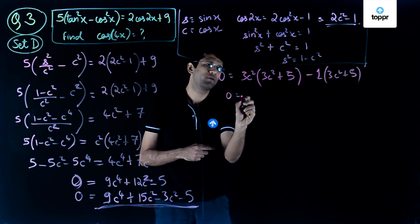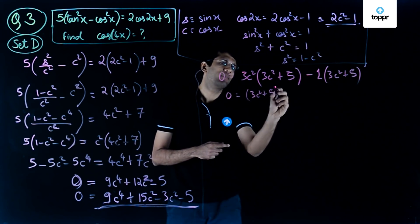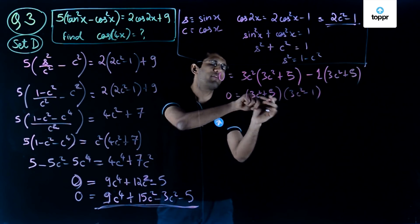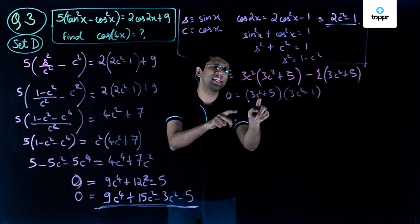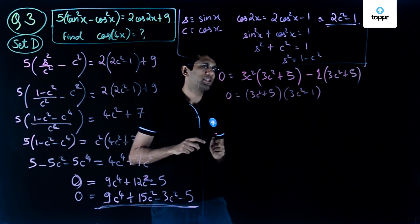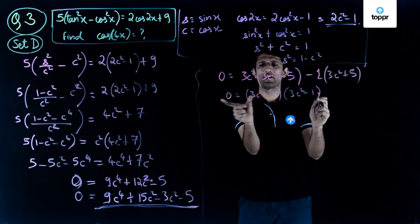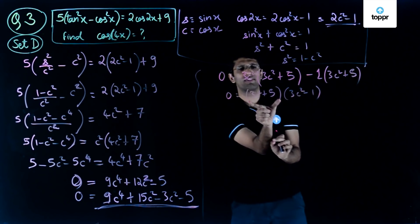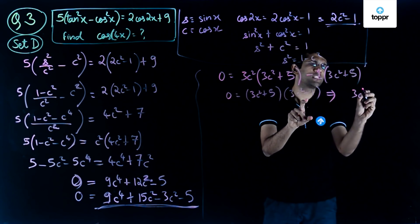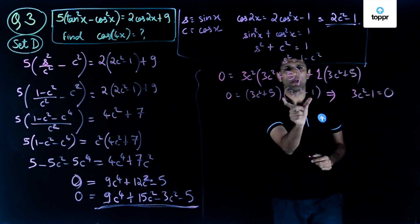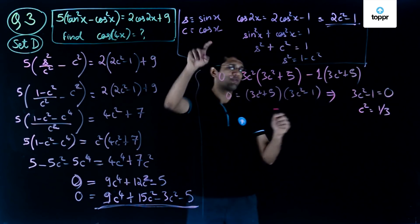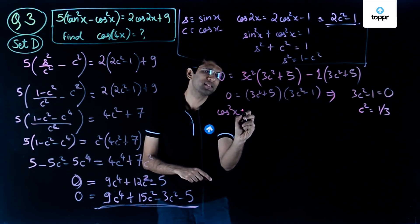This factors as 0 equals 3c squared plus 5 multiplied by 3c squared minus 1. Since c is cos of x, c squared can never be negative, so 3c squared plus 5 can never equal 0. Therefore the second factor must be zero: 3c squared minus 1 equals 0. This gives c squared equals 1 upon 3, meaning cos squared of x equals 1 upon 3.